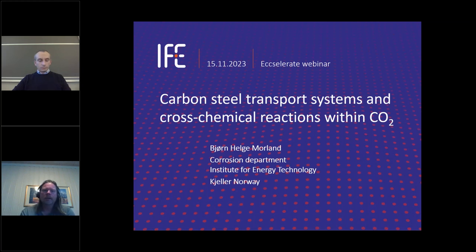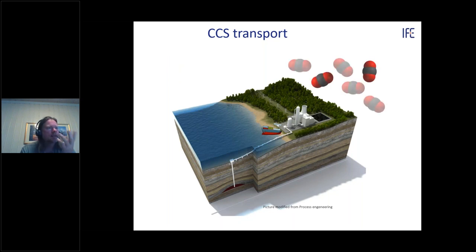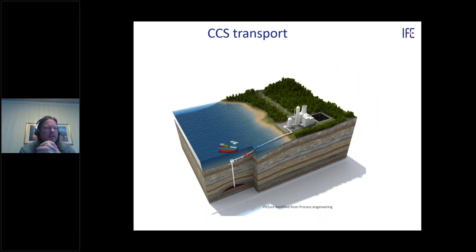Thank you for the kind introduction. I will talk about carbon steel transport systems and the cross-chemical reactions which can occur during CO2 transport. CCS works like this: the CO2 is captured and compressed, then transported in a pipeline or ship to a reservoir for storage or utilization. My focus is the transport system.